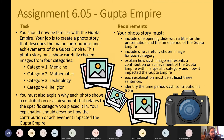For the assignment, you must include an opening slide and one carefully chosen image for each category. Explain how each image represents the contribution or achievement and how it impacted the Gupta Empire. Each explanation should be at least three sentences long. Also identify the time period in which each contribution comes from. Make sure everything is in your own words.